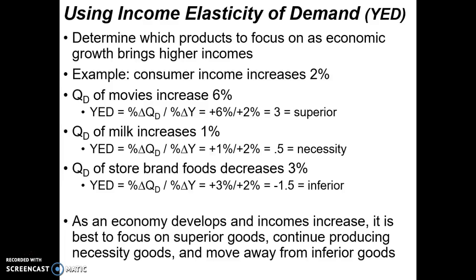Movies are superior products — luxury goods. People have more money in their pocket and tend to spend it on things they want. The quantity demanded of milk only increases 1%. Plugging in, positive 1 over positive 2 equals 0.5. It's a positive value — demand for milk went up slightly compared to the increase in income. That 0.5 reveals milk is a necessity. People don't dramatically increase milk purchases just because they have more money — maybe a little more, but not like movies.